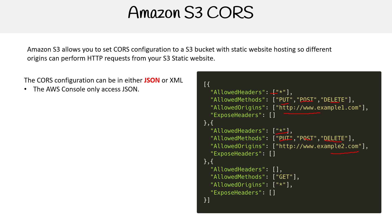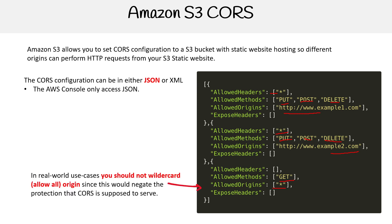Down below, we're not specifying any headers to be allowed, but we're saying let's be able to GET anything from anywhere. Generally, you don't want to use the asterisk wildcard here, as it would negate the protection of CORS — basically saying you don't want any CORS protection. In development, you'll often set this and then narrow it down once you have CORS working. In production, you would not want to have a wildcard there.